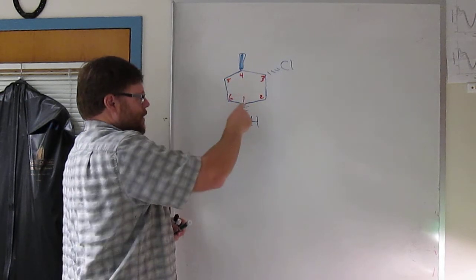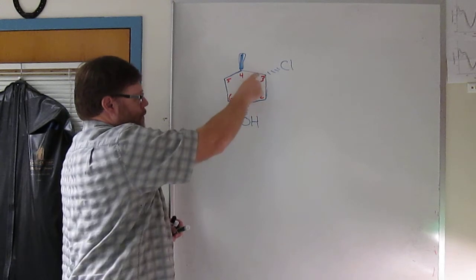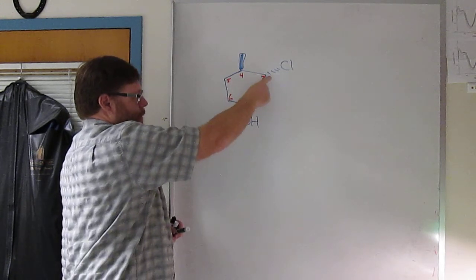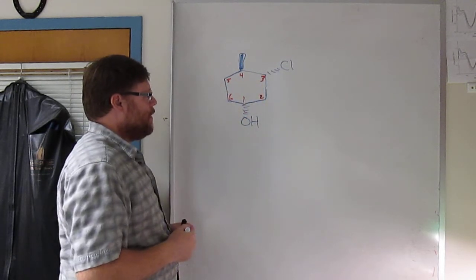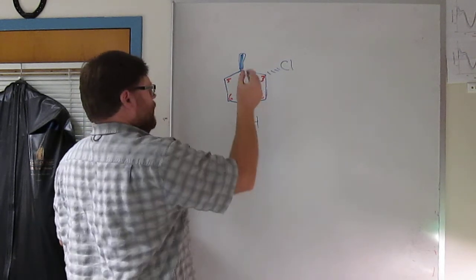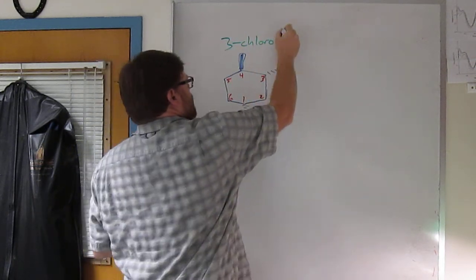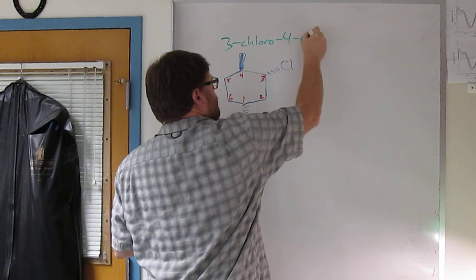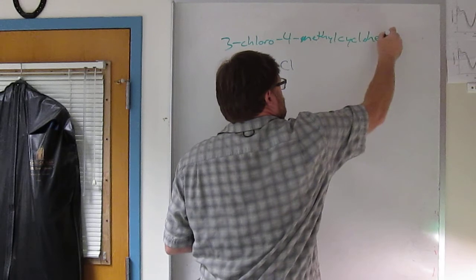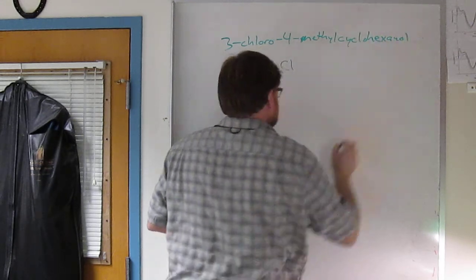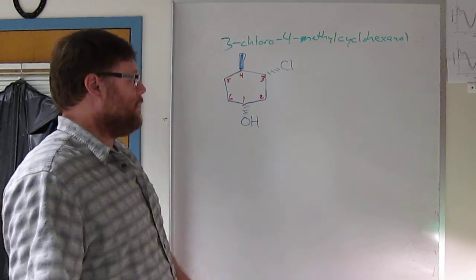You have to go either clockwise or counterclockwise. We go in this case counterclockwise because that gives us three, four rather than four, five if we went clockwise. So this winds up being, in alphabetical order, 3-chloro-4-methyl-cyclohexanol.